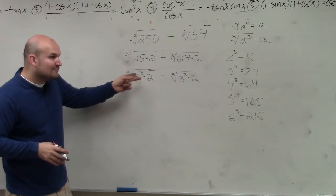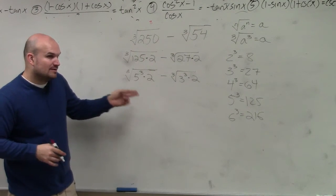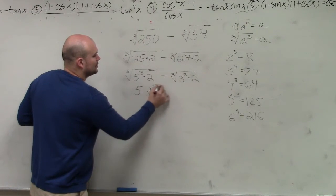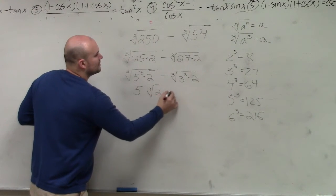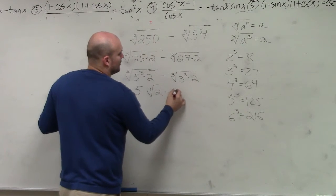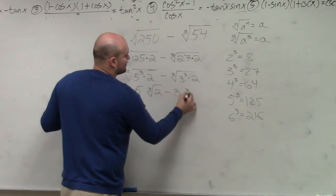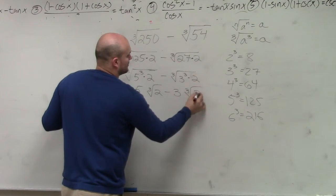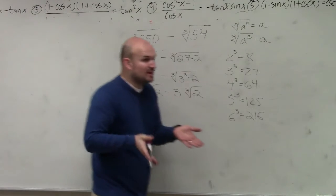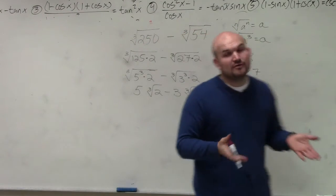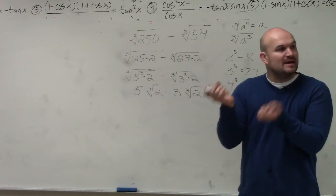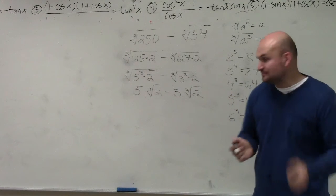So the cube root of 5 cubed is 5. Can't take the cube root of 2. Minus the cube root of 3 cubed is 3. Remember, when multiplying or dividing, the index had to be the same and then you just multiplied and divided the radicand.